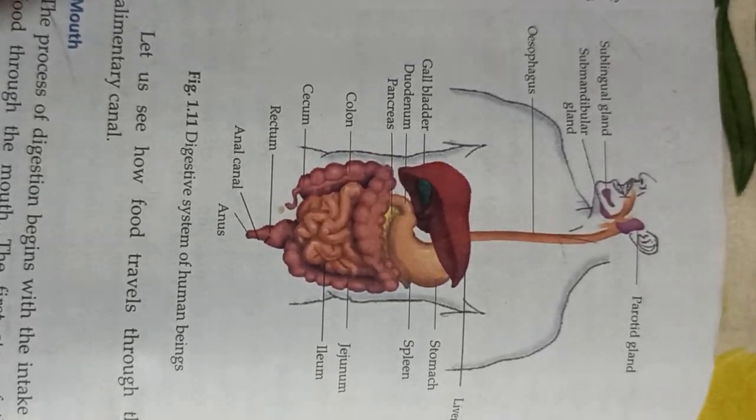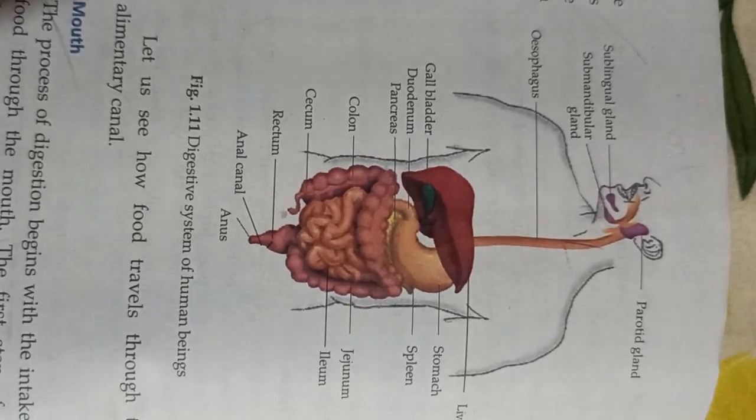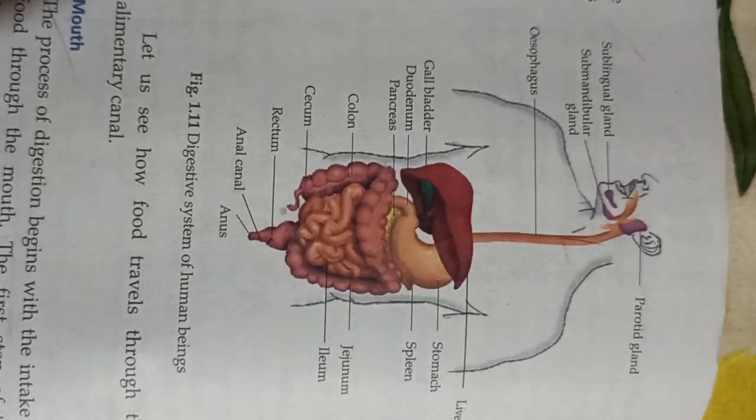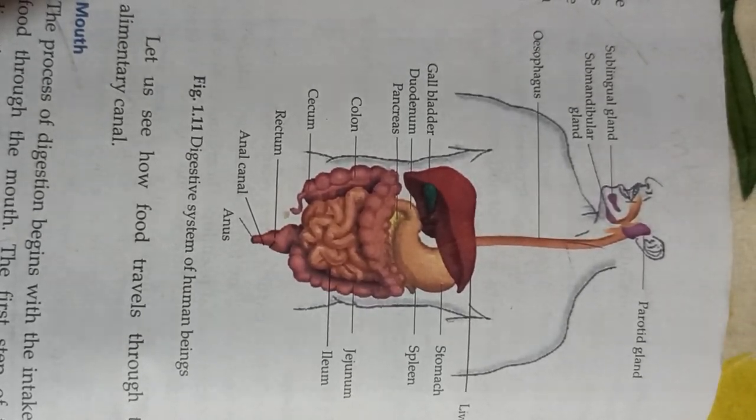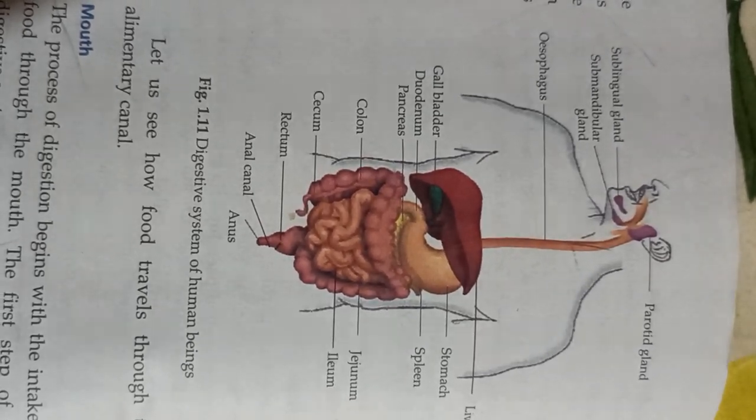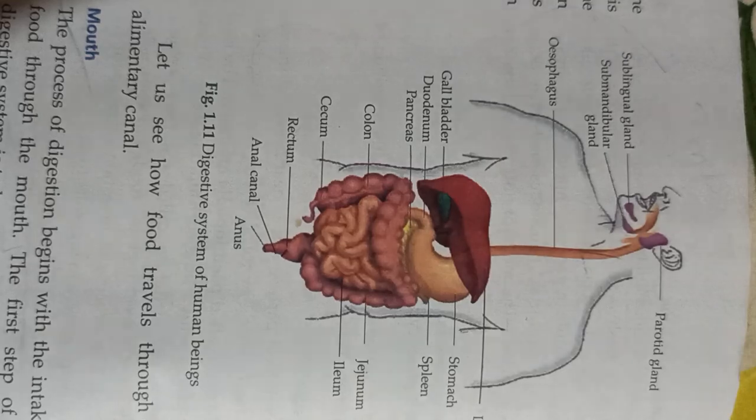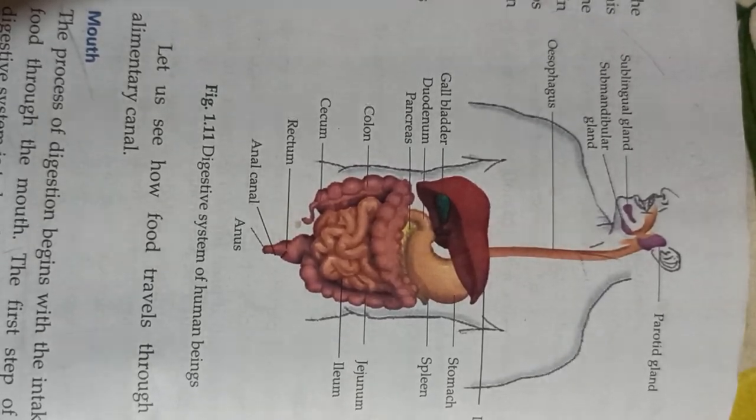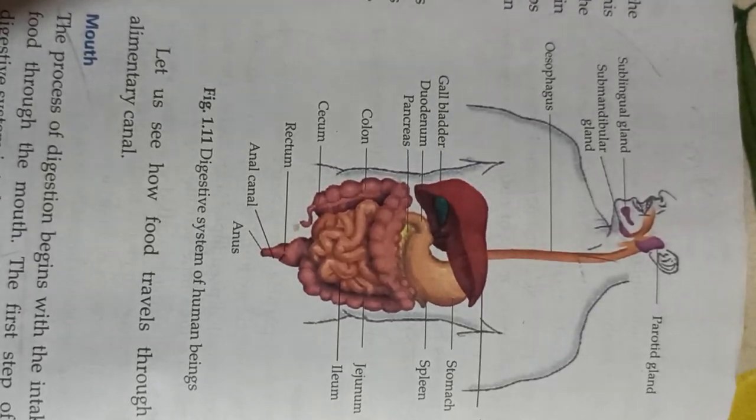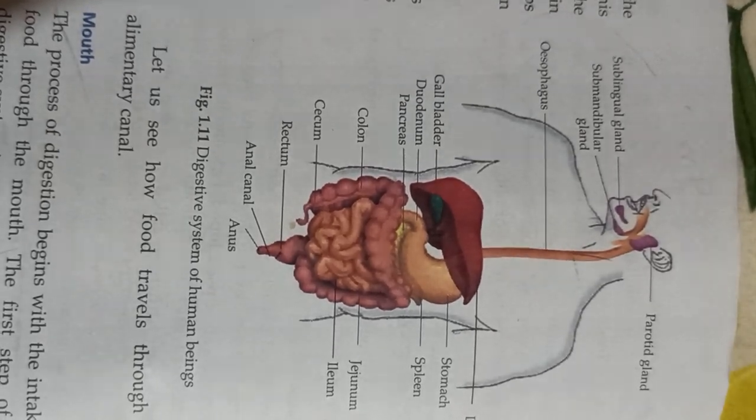As we take our food through our mouth and start to chew it, amylase enzyme which is present in saliva gets mixed with the food. Three pairs of glands are present which secrete saliva.